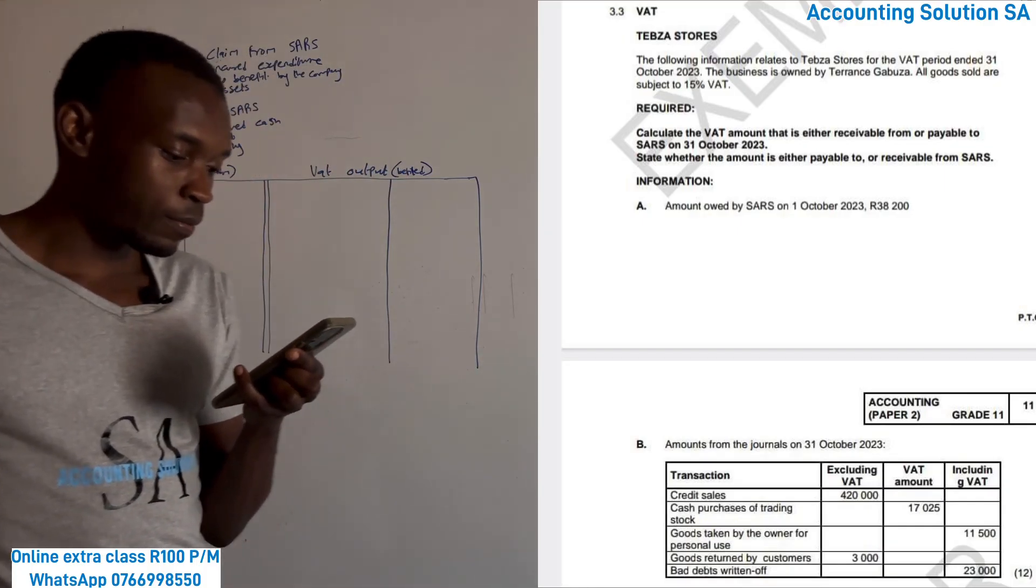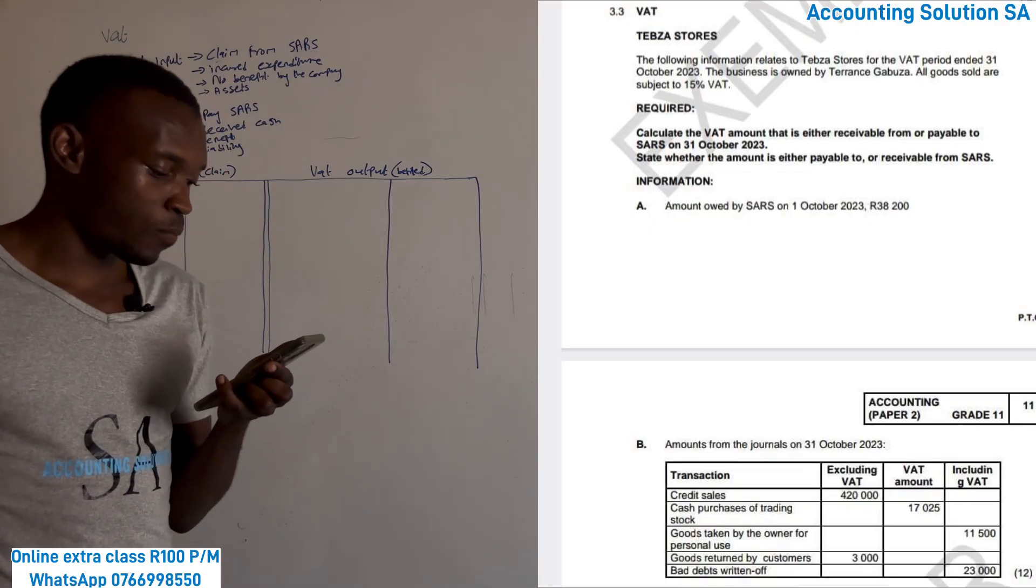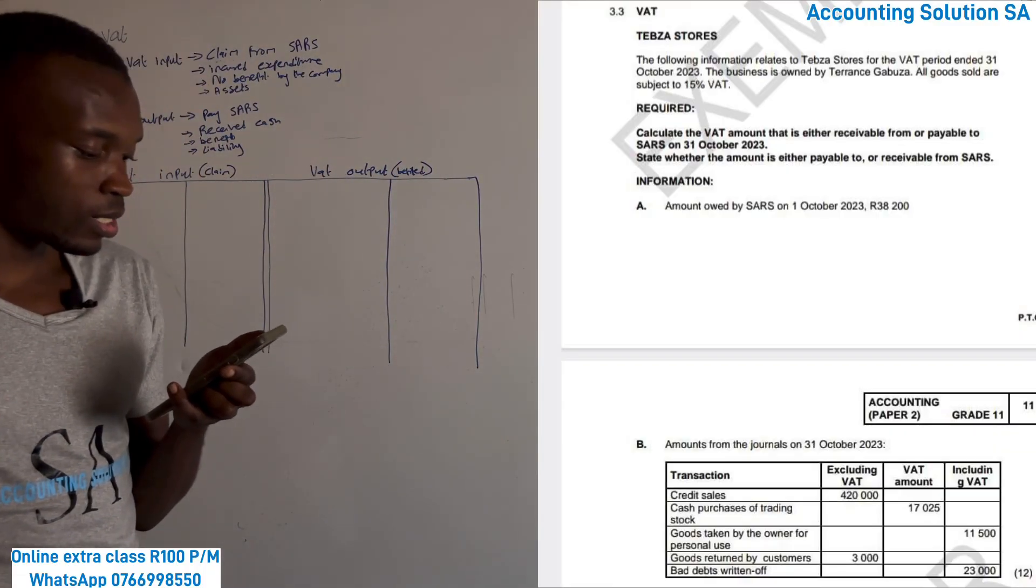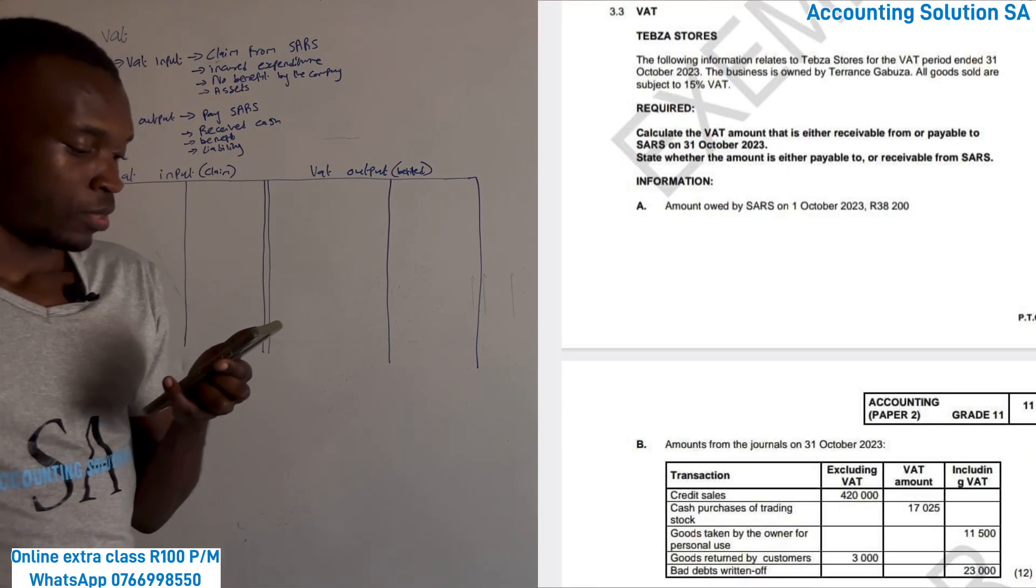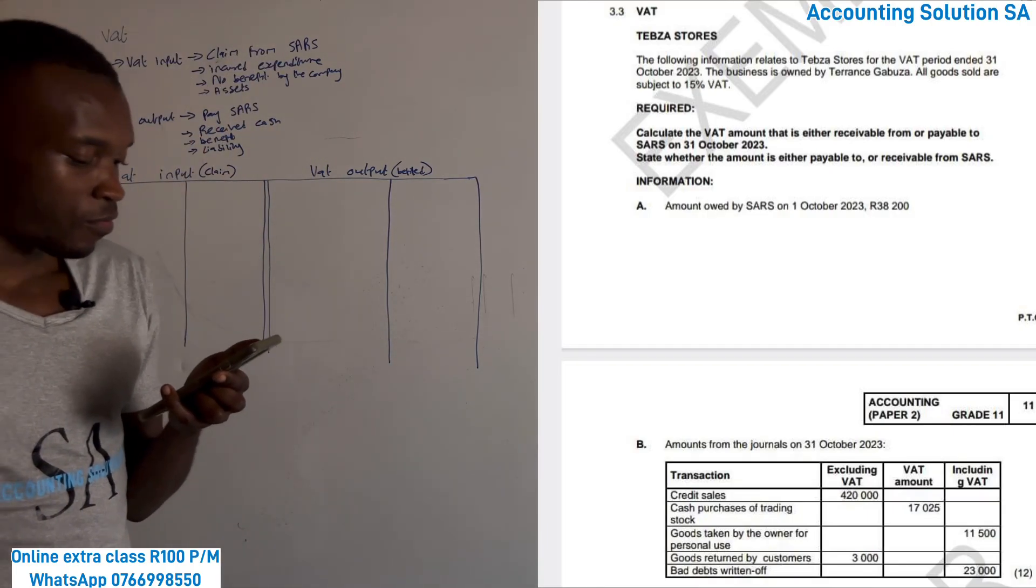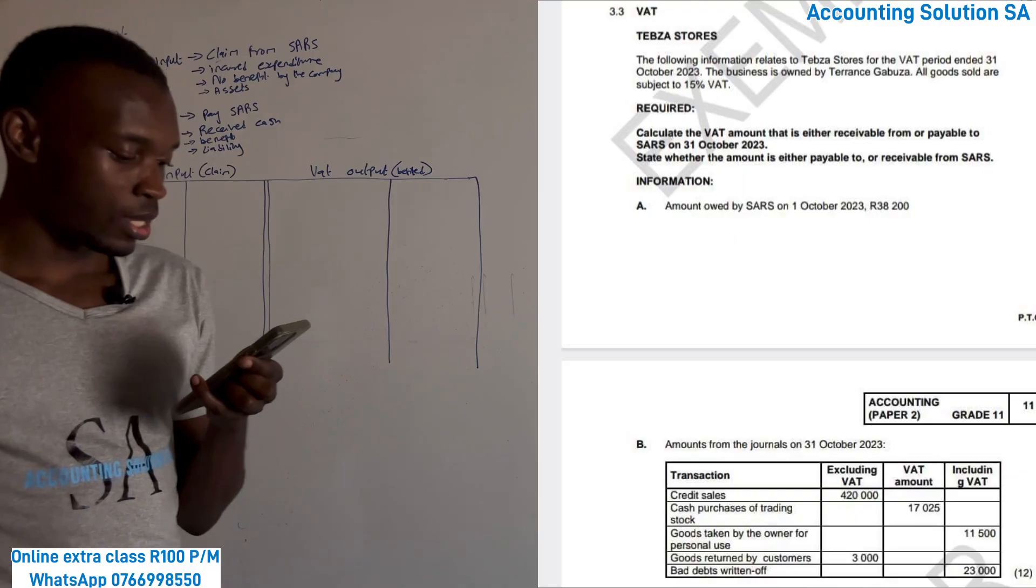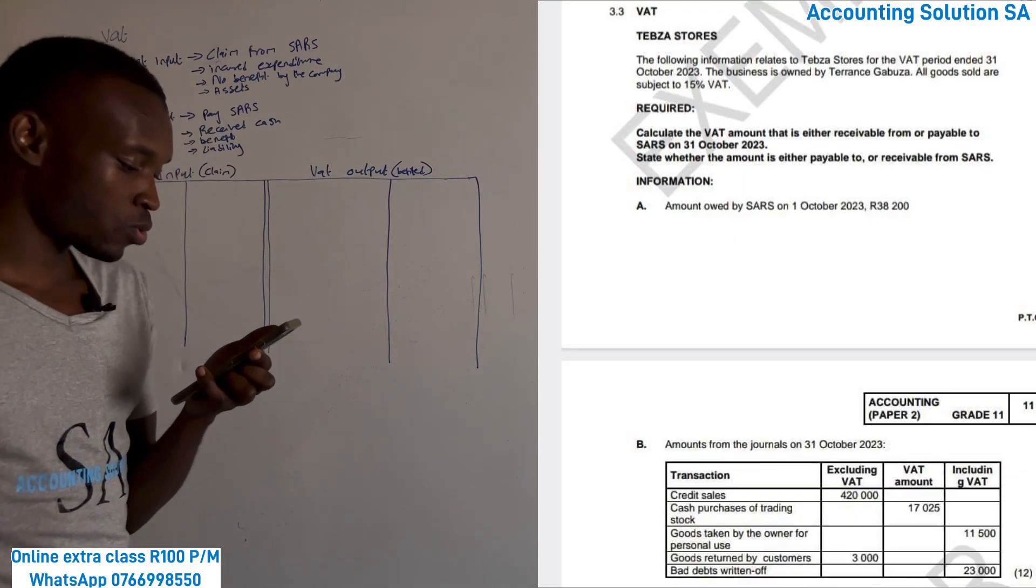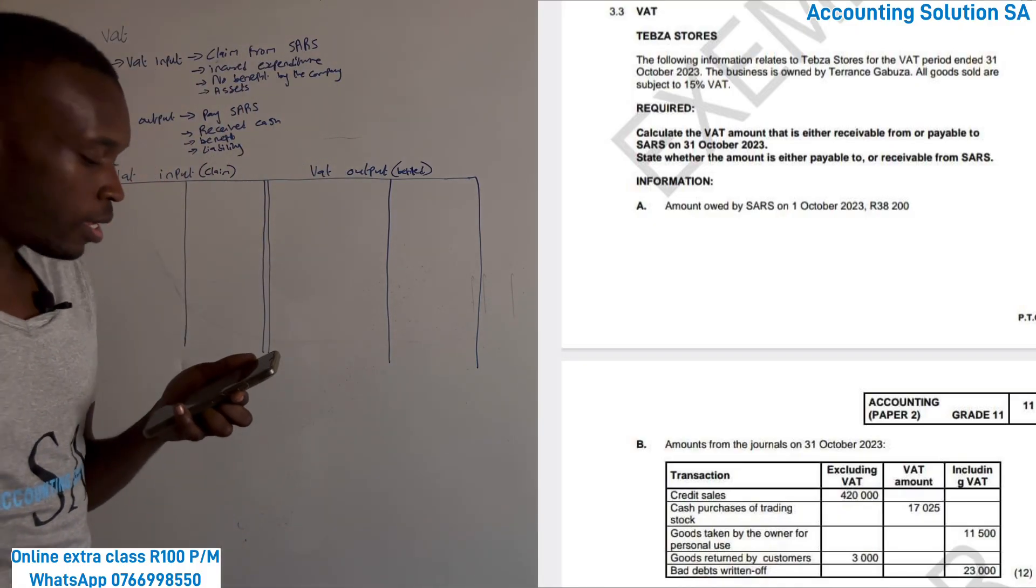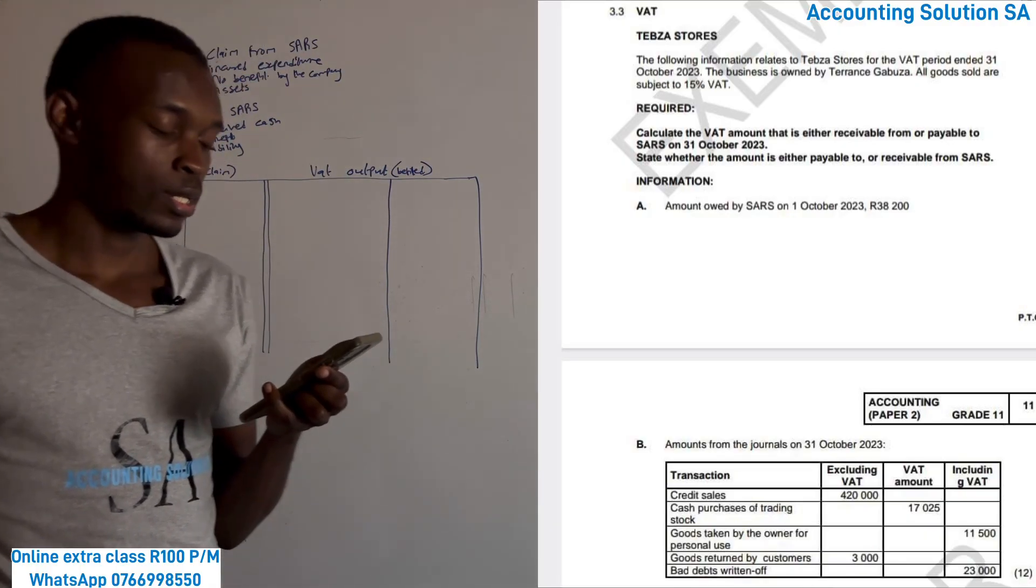The following information relates to Tabza Store for the period ended 31 October 2023. The business is owned by Terence Gaboza. All goods sold are subjected to 15% VAT. Required: calculate the VAT amount that is either receivable from or payable to SARS on 31 October 2023. State whether the amount is either payable to or receivable from SARS. Information A: amount owed by SARS on 1 October 2023 is 38,200.